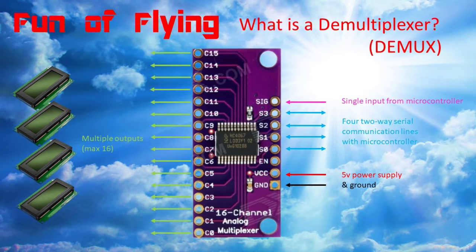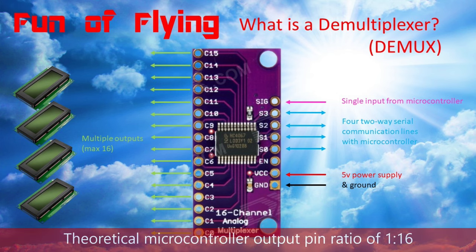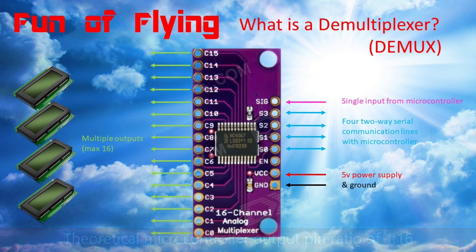The cleverness of this device doesn't end there, because depending on how you write the associated IDE sketch code you can also set it up in completely the opposite way. You can have one signal input coming from the microcontroller to one side of the device, and then have 16 different outputs leaving on the other side — to, say, a number of LCD displays. In this case you have a theoretical output ratio of 1 to 16, and when set up like this the device is referred to as a demultiplexer, or demux.